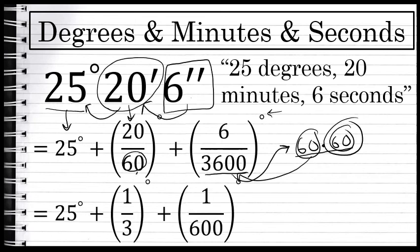Simplifying this a little bit: 20 over 60 is 1 over 3 degrees, and 6 over 3600 is 1/600th of a degree.